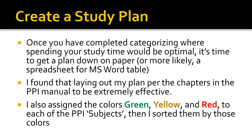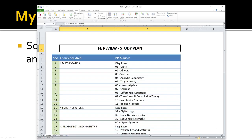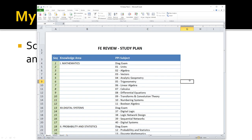Once you have completed categorizing where you're spending your study time, it's time to get a plan down on paper — or more likely a spreadsheet or Microsoft Word table. I used a spreadsheet; it's easier to work with for this type of material. I found that laying out my plan per the chapters in the PPI manual was extremely effective. I also assigned colors — green, yellow, and red — to each of the PPI subjects, then sorted them by those colors. On screen right now is actually my first draft study plan, including all the topics, knowledge areas, and subjects per the PPI manual.